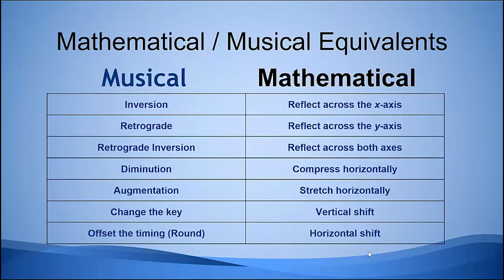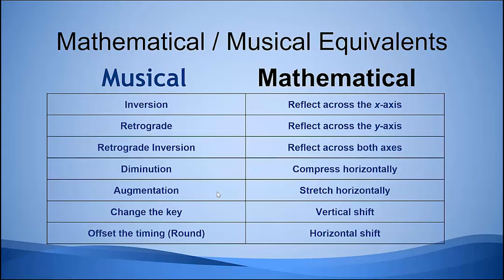If you look at the terms, both the musical composition tools and the mathematical transformation tools have a counterpart for everything in each list. We've used inversion, retrograde, and retrograde inversion. There's also something called diminution, which is when you halve the length of each note — that's equivalent to compressing horizontally. There's augmentation, where each original note is played for twice as long, which is equivalent to stretching horizontally. If you change the key of a musical piece, it's equivalent to a vertical shift. And if you offset the timing — like singing a round such as 'Row, Row, Row Your Boat' — that would be equivalent to a horizontal shift.